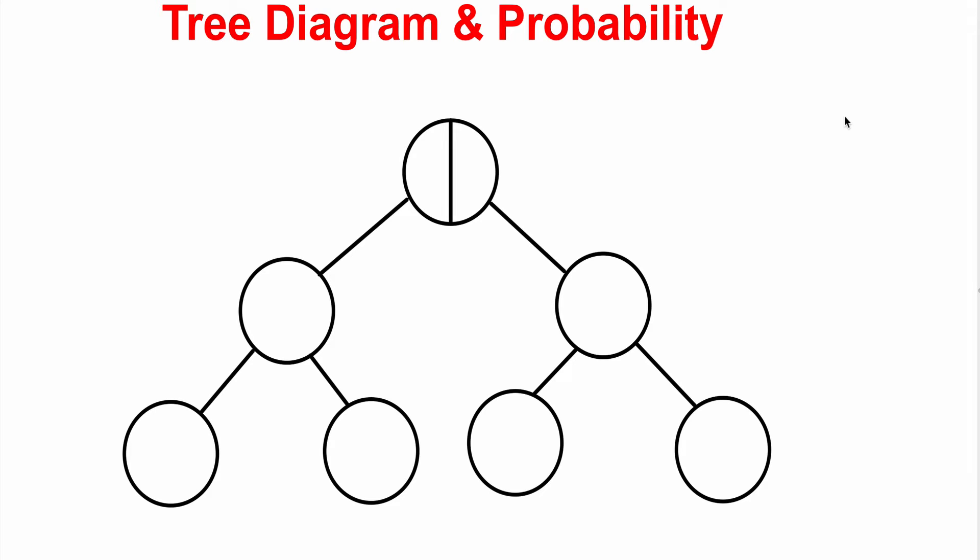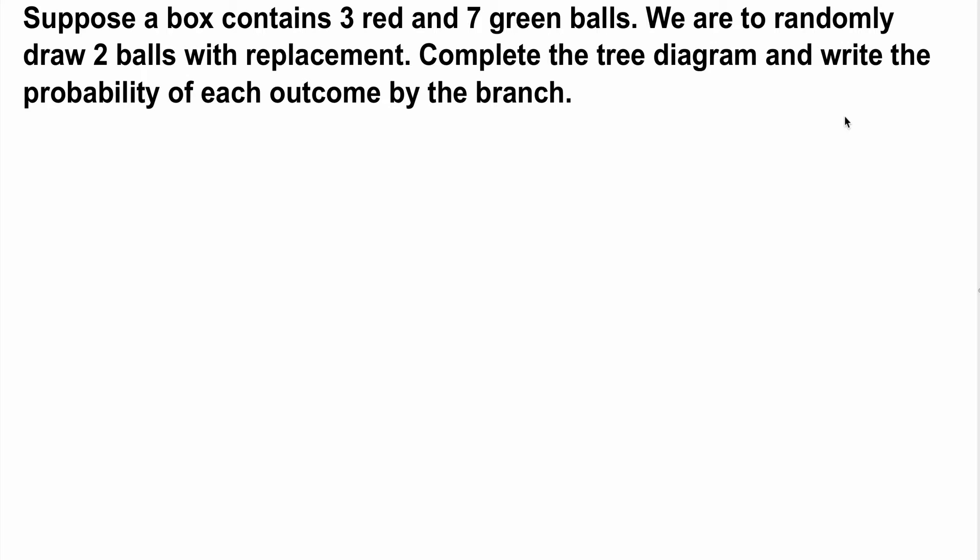Now let's take a look at tree diagrams and probability. A typical tree diagram looks like the drawing you see in front of you. Suppose we have a box that contains three red and seven green balls and we are to randomly draw two balls with replacement. So after you draw the first ball you place it back in the box and then you draw the second ball. We want to complete the tree diagram and write the probability of each outcome by the branch.